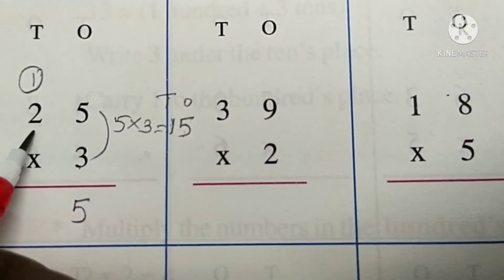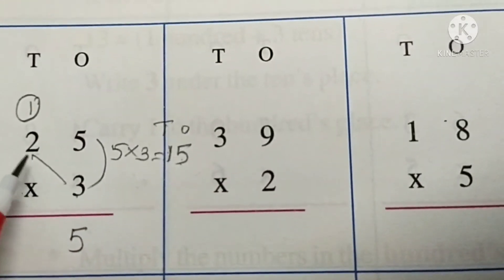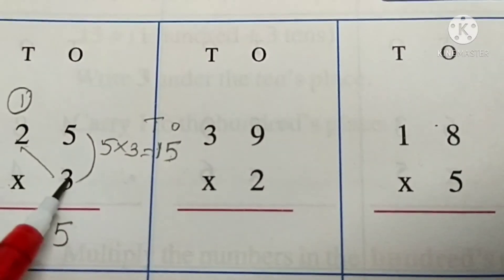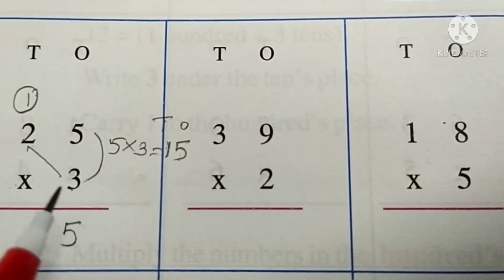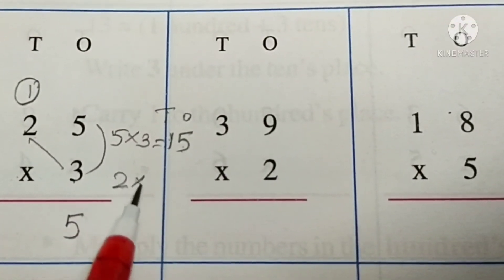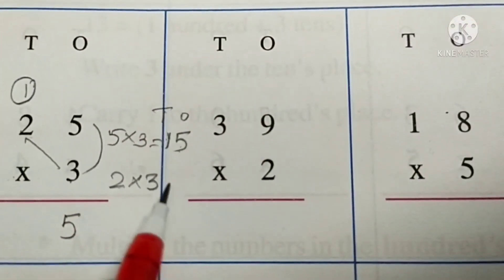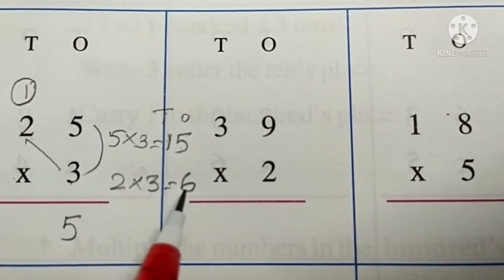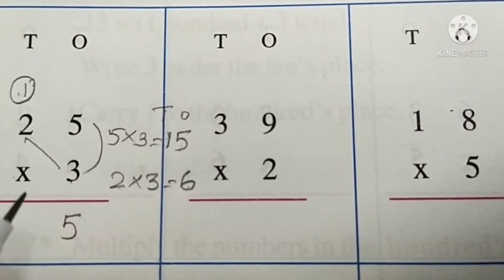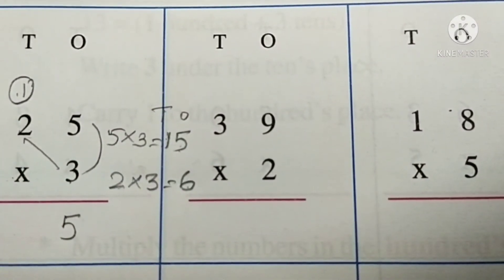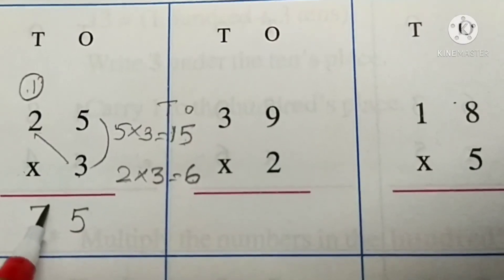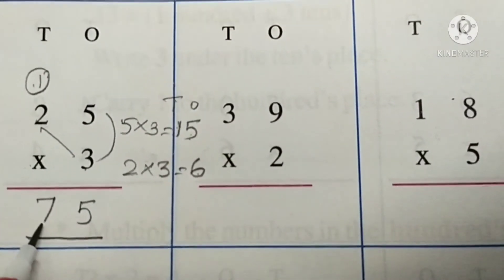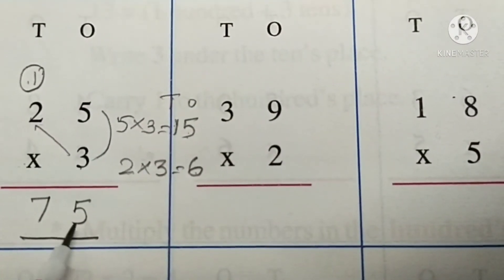Next, multiply the numbers at the tens place. Two multiplied by three — two threes are six. Add six plus one equal to seven. So the answer is seventy-five.